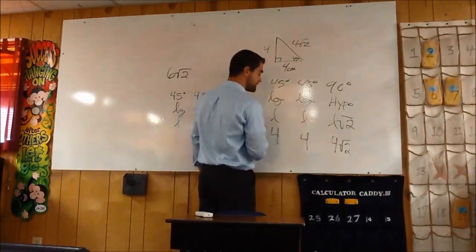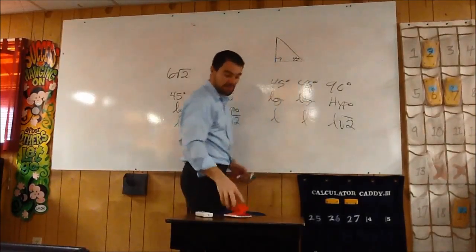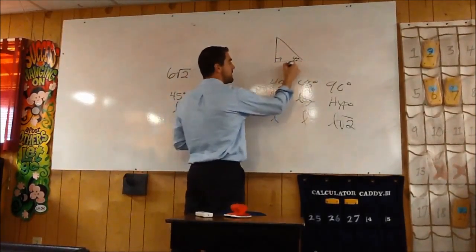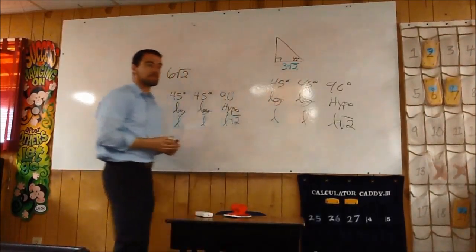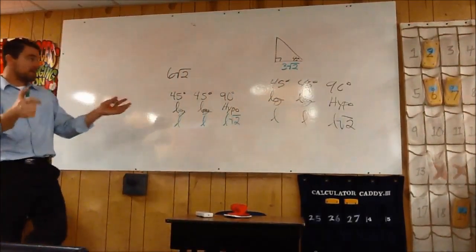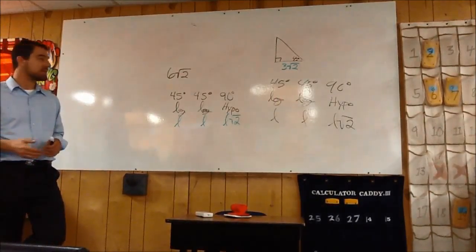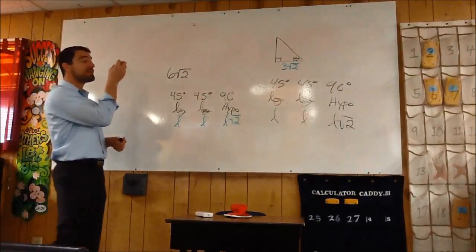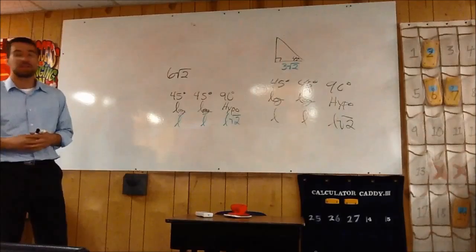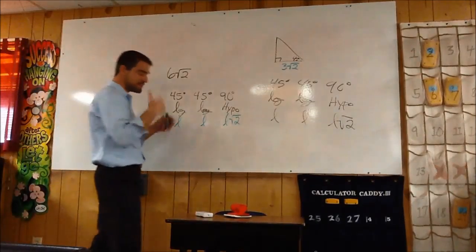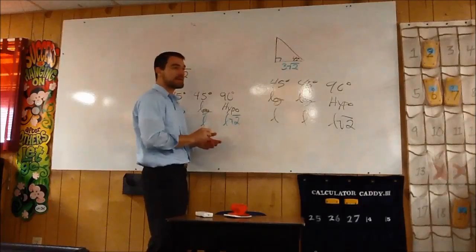What's fun is, and you'll see this in this evening's homework, is where they give you something like this — a 45-45-90 triangle, however they choose to indicate that, whether with marks of congruency, giving you angle measurements, or telling you the base angles are congruent. Whatever. You can conclude that this is a 45-45-90 triangle — it is a right isosceles triangle.